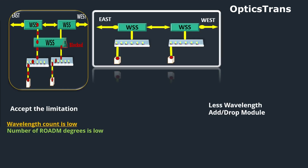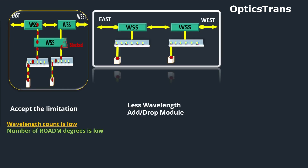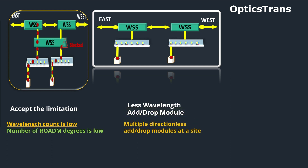The second approach is to use multiple wavelength add-drop modules. As this wavelength blocking applies when we have a single add-drop module, like in a directionless configuration. The third approach is to move to contentionless.